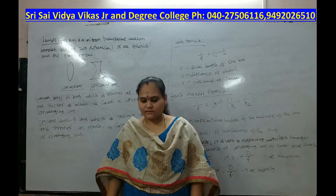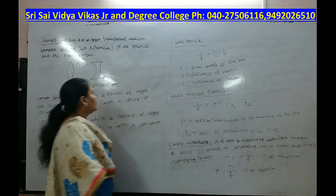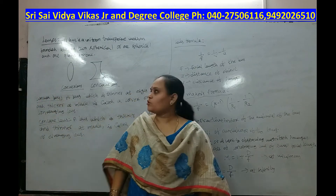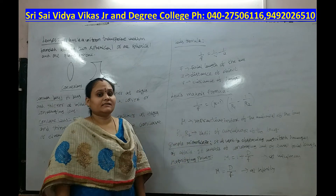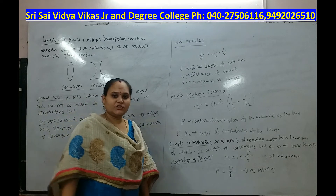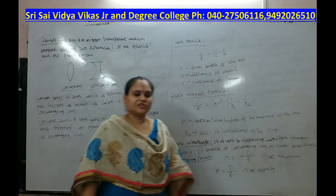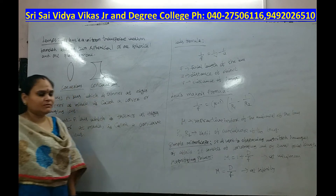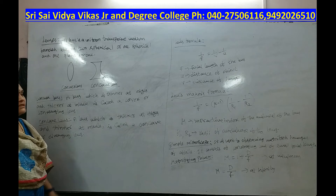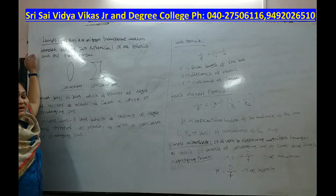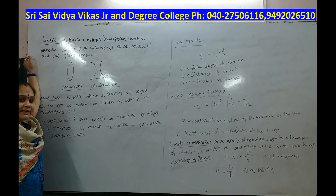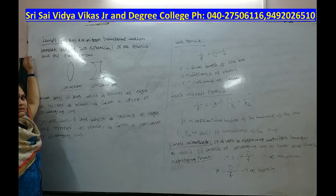Good morning everyone. Today our topic is the remaining part of ray optics — specifically lenses. In yesterday's class we discussed reflection, refraction, transmission, loss of reflection, loss of refraction, and prisms. Today we will discuss what is meant by a lens, the different types of lenses, the microscopes we use in labs, and the different types of aberrations.